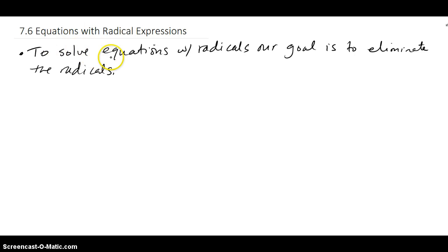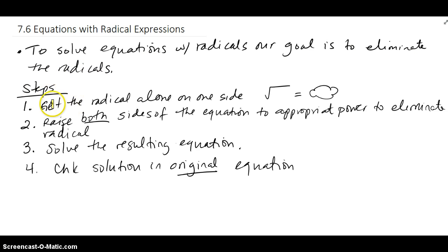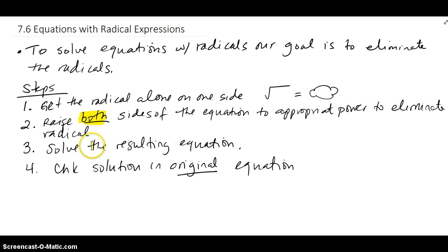In this section we'll be solving equations with radicals. Our goal is to eliminate the radicals and then proceed. The steps are: get the radical alone on one side, raise both sides to the appropriate power to eliminate the radical, solve the resulting equation, and then check the solution in the original equation to make sure you get a true statement.